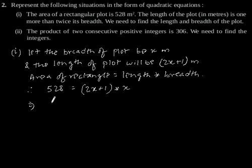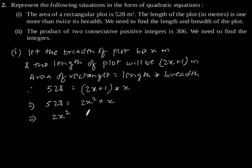This implies 528 = 2x² + x, which implies 2x² + x - 528 = 0. Which is our answer.